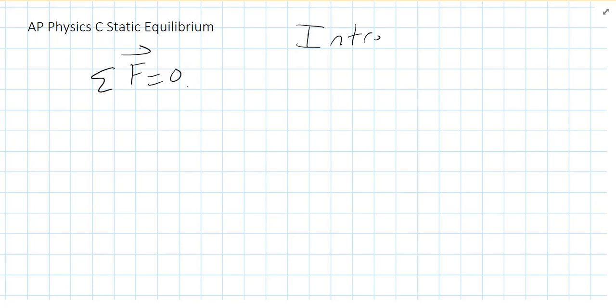In other words, if alpha is zero, what do we know? Well, then net torque is going to equal zero. So basically, that is all of static equilibrium.